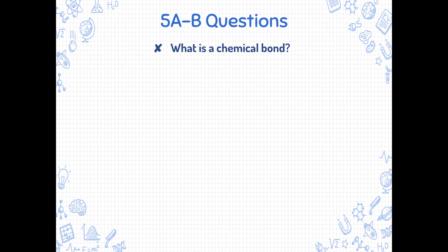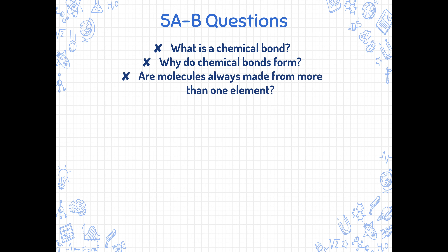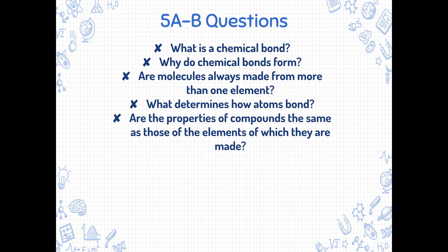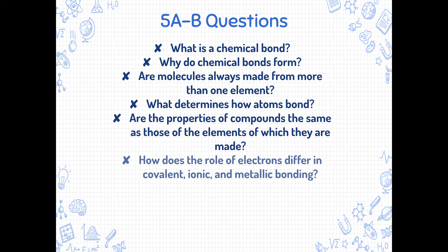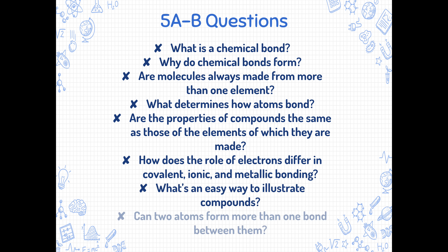The objectives of this lesson: What is a chemical bond? Why do chemical bonds form? Are molecules always made from more than one element? What determines how atoms bond? Are the properties of compounds the same as those of the elements of which they are made? How does the role of electrons differ in covalent, ionic, and metallic bonding? What's an easy way to illustrate compounds? And can two atoms form more than one bond between them?